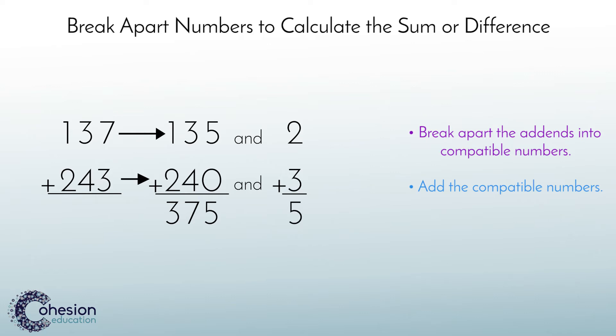So you're left with 375 plus 5, which is 380. So the answer to 137 plus 243 is 380.